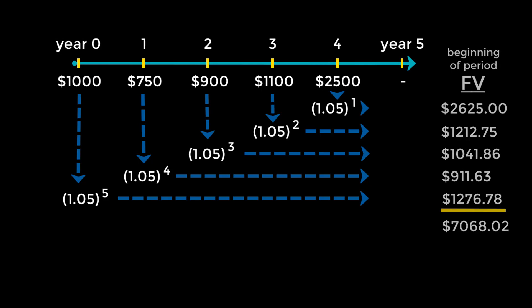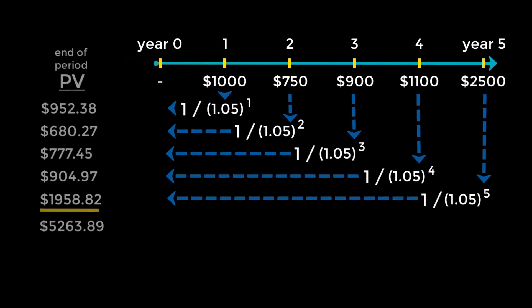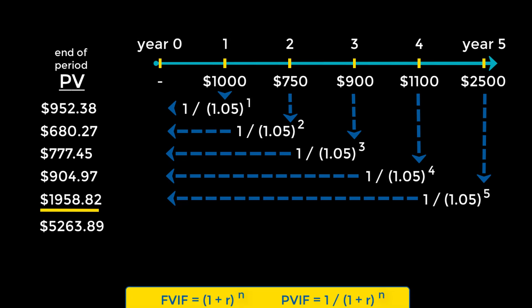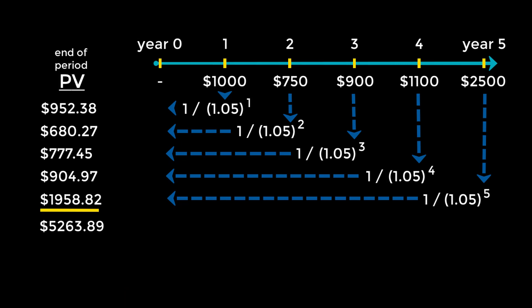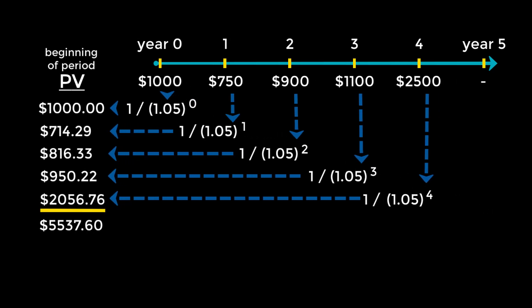Fundamentally, we can apply these concepts to finding present value as well. In the form of a timeline, the only difference would be that we would be multiplying each cash flow by the present value interest factor, PVIF, which represents the expression 1 over (1 + r) raised to n, rather than the future value interest factor, FVIF. There will also be a difference in the present value of multiple cash flows, depending on whether the cash flows occur at the beginning or end of each period.